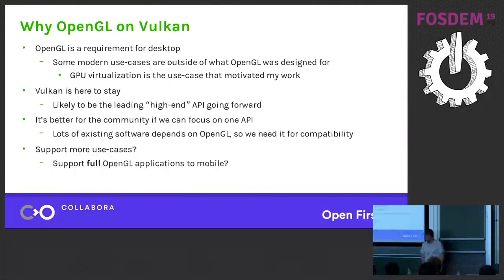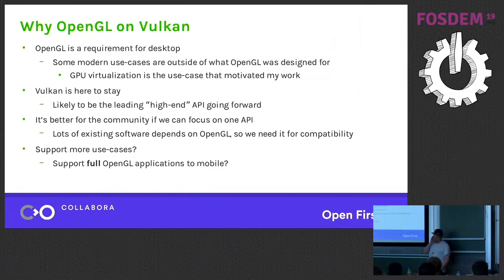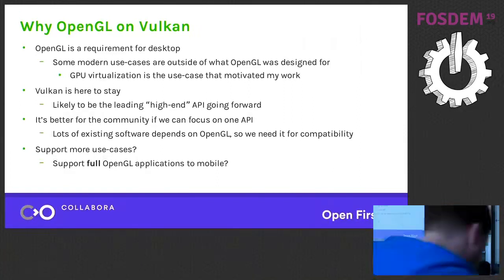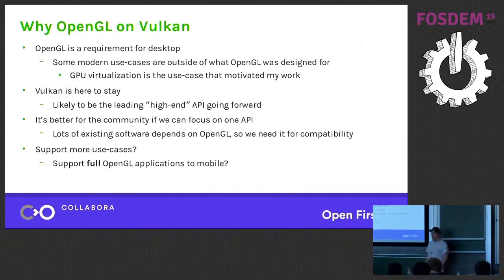The reason we want to solve this is that OpenGL is a requirement for supporting desktop applications. It's a pretty dated API — it's been around since 1992, and the hardware has changed a lot since then, and so has the software world. So there are a lot of things that OpenGL isn't well suited for. My work came out of virtualization — being able to use GPUs in virtual environments. I'm working on Virgil and Mesa for this, and there are some problems we're trying to circumvent by seeing if this venue works.